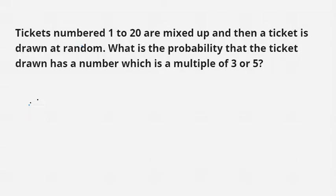Friends, in this video our question is: Tickets numbered from 1 to 20 are mixed up and a ticket is drawn at random. What is the probability that the ticket drawn has a number which is a multiple of 3 or 5? If our tickets are numbered from 1 to 20, then we need to find the numbers which are multiples of 3 or 5 between 1 and 20.